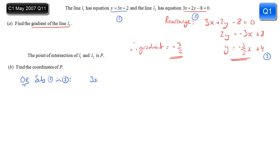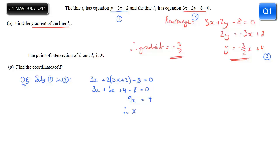Substituting equation 1 into equation 2: 3x plus 2y, so instead of y I'm putting in 3x plus 2 from equation 1. That gives us 3x plus 2 times (3x plus 2) minus 8 equals 0. Expanding the brackets: 6x plus 4 minus 8 equals 0. Gathering the x's and numbers: 9x equals 4. Finally, dividing by 9 gives x equals 4 ninths.